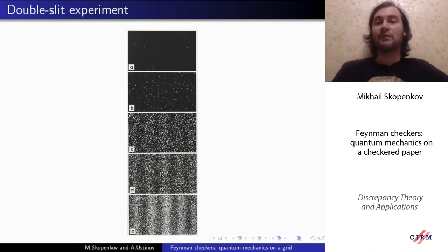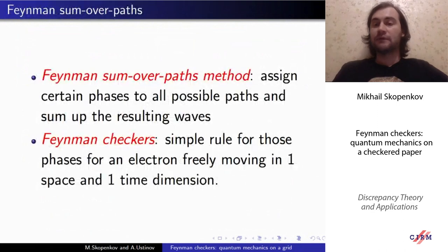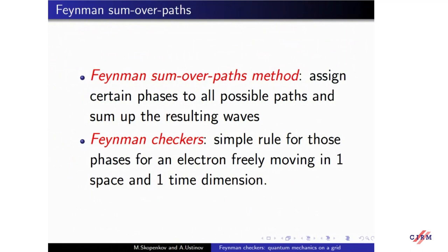This is an example of some general phenomenon. The Feynman sum-over-paths method to compute such probabilities is to assign certain phases to all possible paths and sum up the resulting waves. The Feynman checkers model, which we are going to discuss today, is a particularly simple combinatorial rule for those phases, for an electron freely moving in one space and one time dimension.